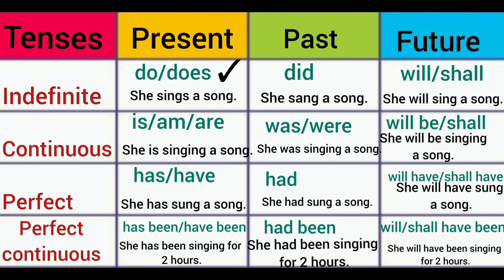For present tense the helping verbs are do and does. Do is used with plural subjects and does is used with singular subjects. For example: she sings a song. For present indefinite we use verb plus s or es according to the subject. Negative will be: she does not sing a song, or does she sing a song? For past indefinite, did is the helping verb and we use the second form of verb — she sang a song. For negative: she did not sing a song, or did she sing a song?